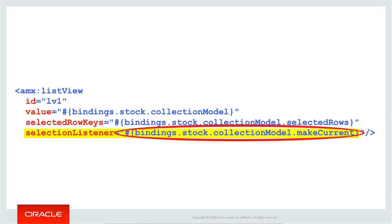Separately, you might have already noticed that the components you have on screen are already wired up with appropriate listeners. For example, you may have a list view where the selection listener property has an EL expression like bindings.stocks.collectionModel.makeCurrent. If you use the power of the IDE to create your UI components using the data control palette, then the IDE will take care to hook your UI components up to the data control objects, which often already have listeners defined. The collection model for stocks has a method provided by the framework called makeCurrent to mark a list item in the collection as the current item if the user selects or touches it, saving you from writing the code yourself.